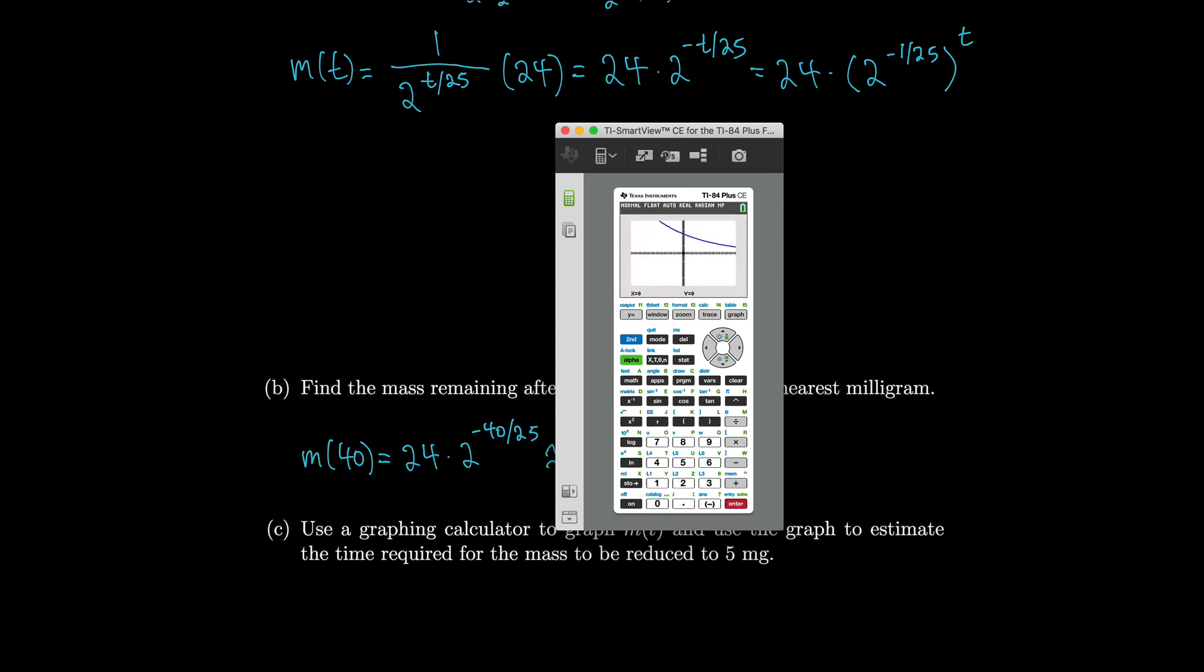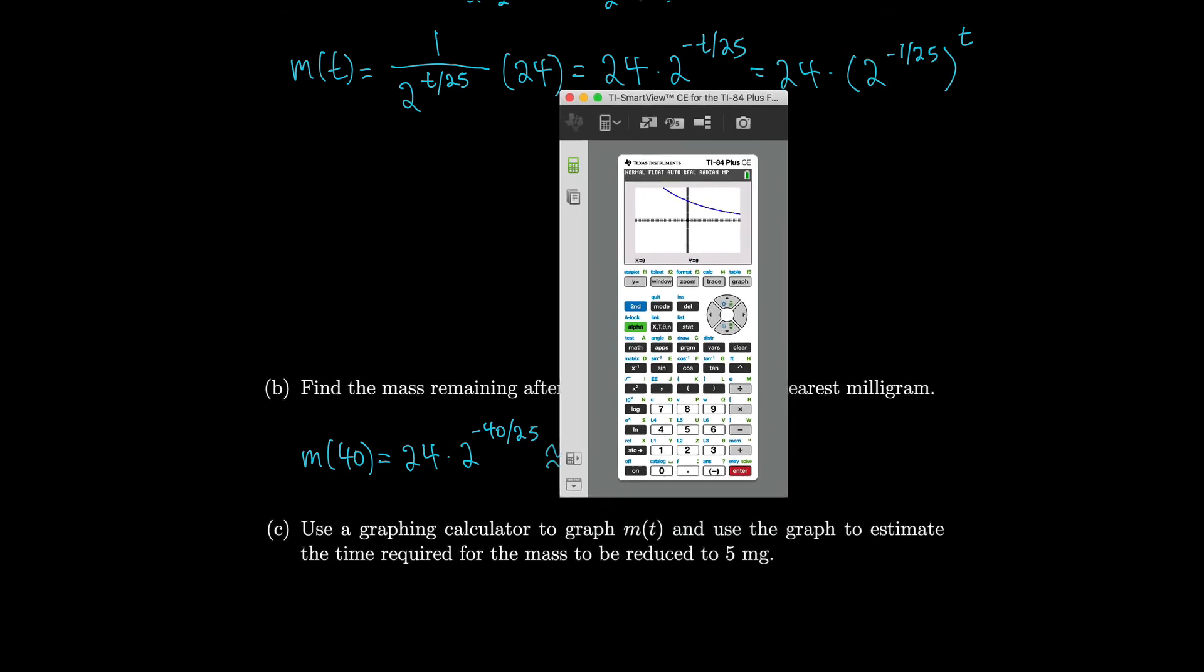Now we don't even see it. Let's zoom out. Ah, there it is. We want to know when this thing is reduced to 5 milligrams. So let's also graph y equals 5 and see where they intersect. So they intersect a little bit off screen. So let's zoom out a little bit more. To find their intersection, how about we try to zoom in over there?